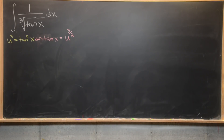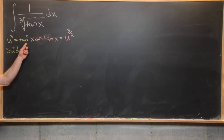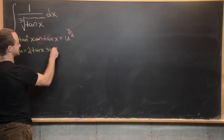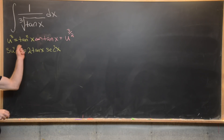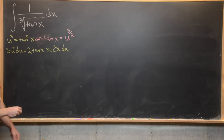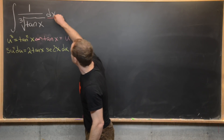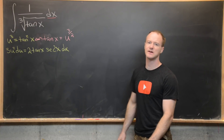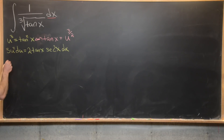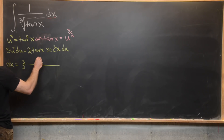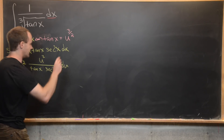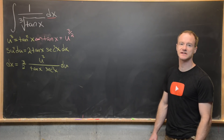Taking the differential of both sides of this substitution equation gives us 3u² du equals — using the chain rule on the right side — 2 times tangent of x times secant squared of x dx. The tangent comes from the power rule and secant squared is the derivative of tangent. What we need is to know what dx is in terms of our u expressions, so let's solve this equation and then start to re-substitute.